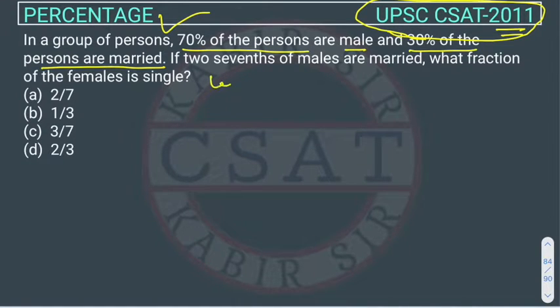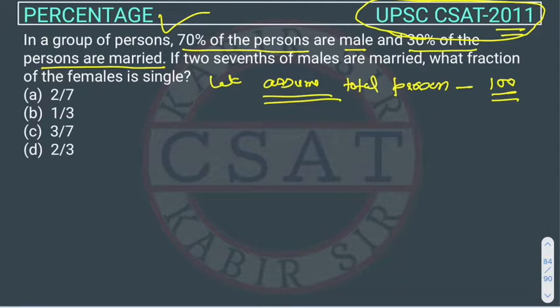Suppose let's assume the total number of total person is 100. I told you that whenever we are doing questions from percentage, we normally assume a multiple of 100 because the calculation is easy. There are 100 people.